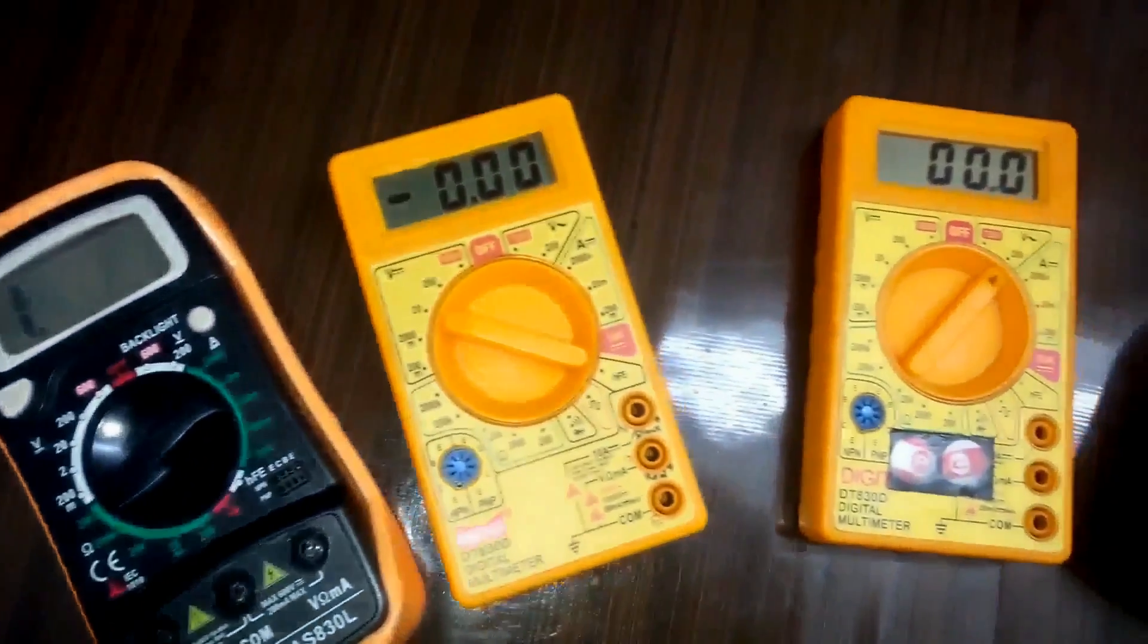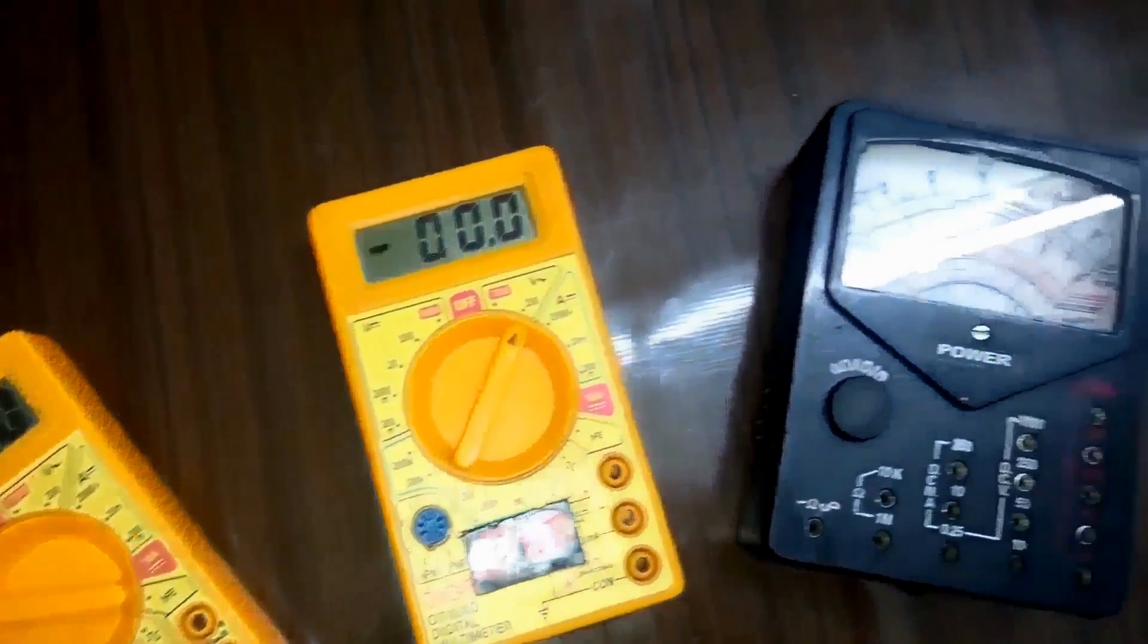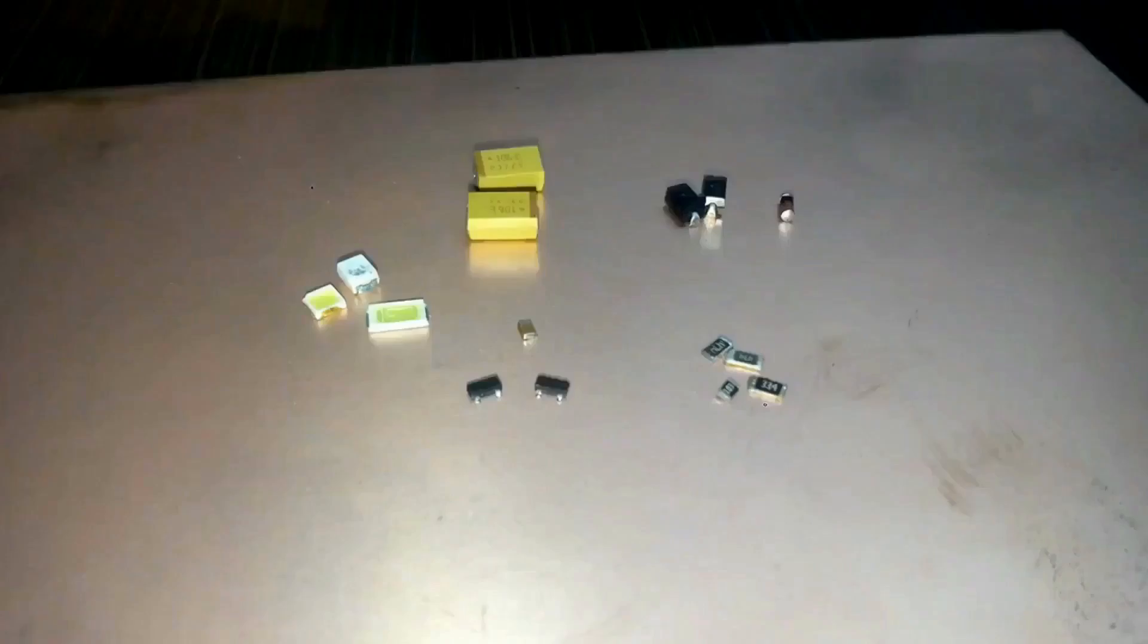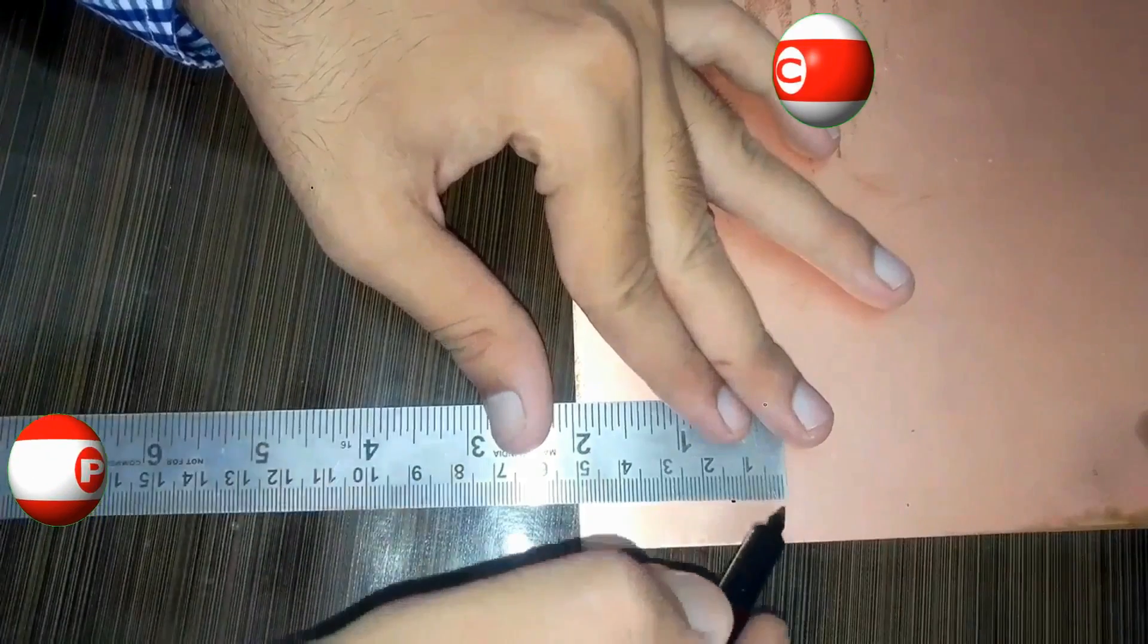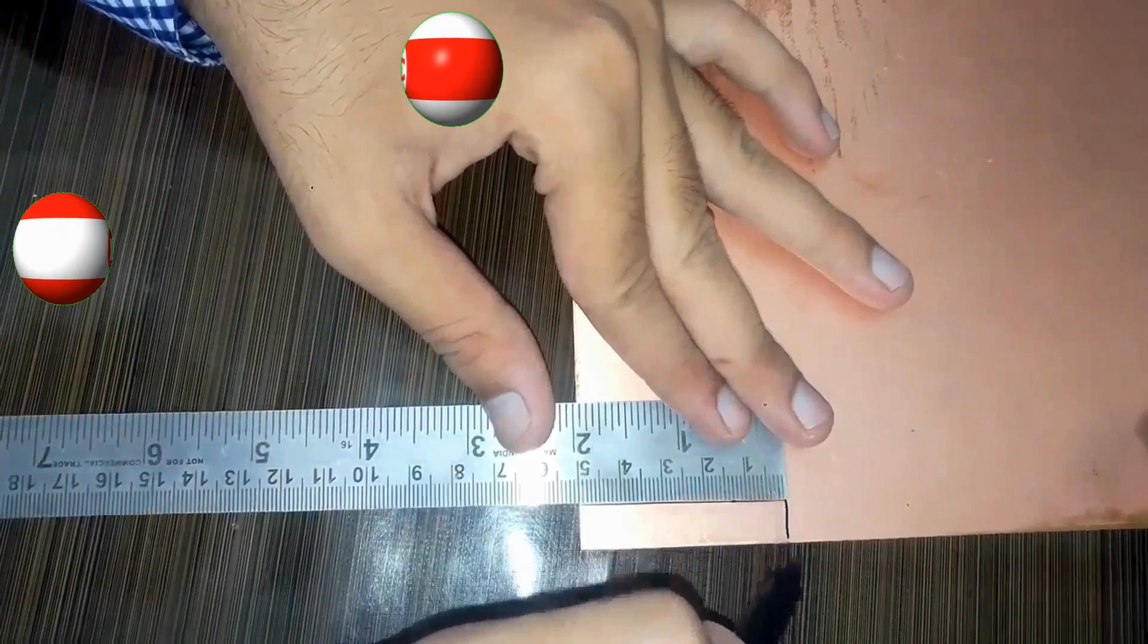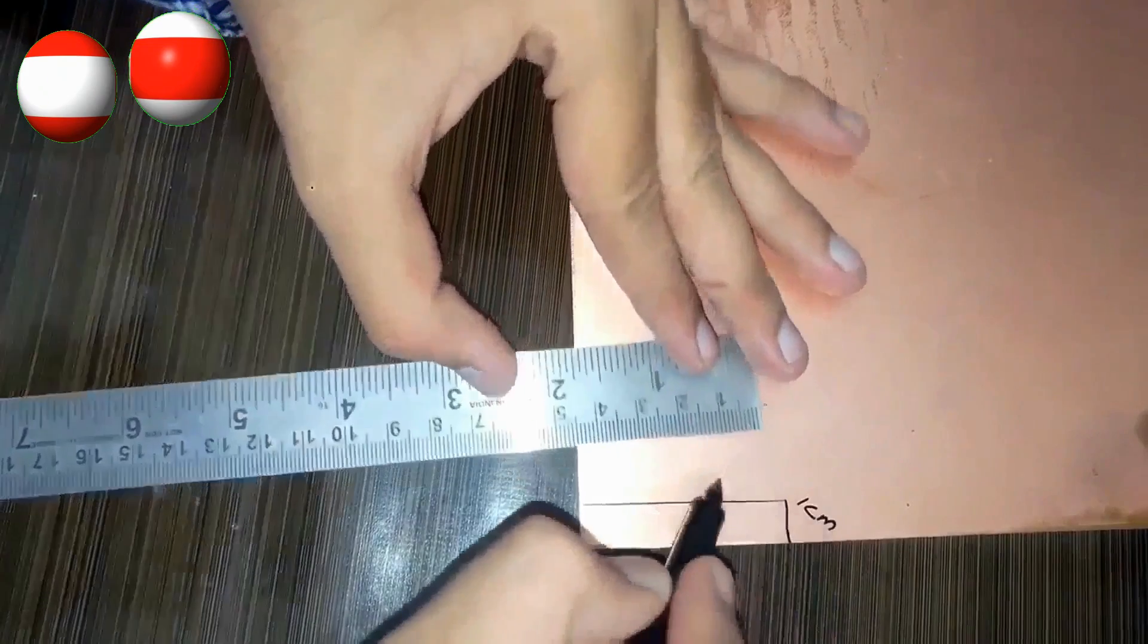Multimeters have lots of models and through-hole components can easily be checked with them, but what about SMD components? They are difficult to check because SMD components have only a contact area rather than a large area. But multimeters can be designed to make them compatible with SMD components, so let's get started.